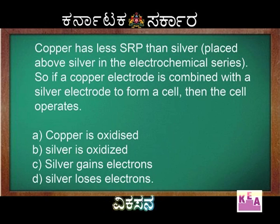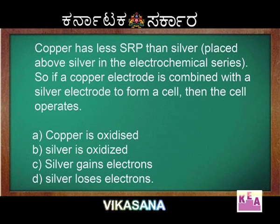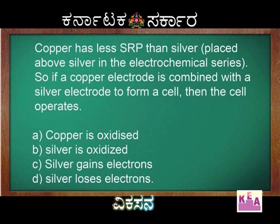Option A: copper is oxidized. Option B: silver is oxidized. Option C: silver gains electrons. Option D: silver loses electrons.